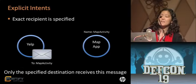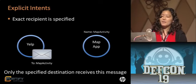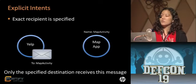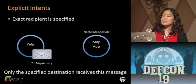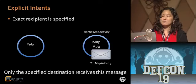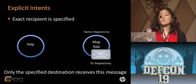There are two types of intents: explicit intents and implicit intents. Explicit intents are those where the sender specifies the recipient by name. For example, the Yelp application could create an explicit intent addressed to a particular map application, and sending that intent will launch that map application. With explicit intents, only the specified destination will receive the message.